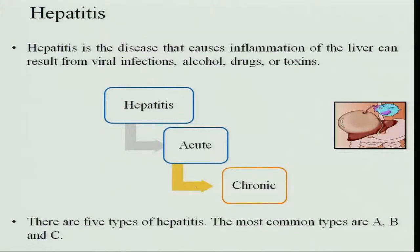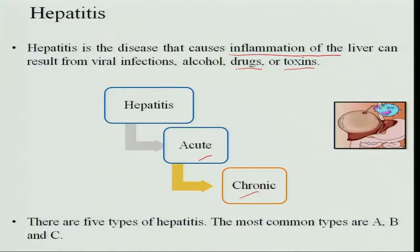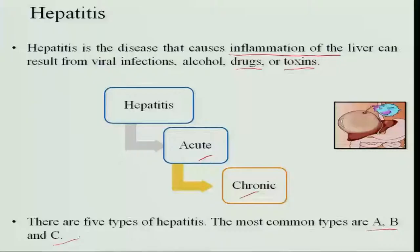Hepatitis is another disorder where the liver is inflamed. It can result from various viral infections, excessive alcohol intake, and excessive use of drugs or toxins. It can be acute or chronic and there are 5 types of hepatitis. The viruses hepatitis A, B, C, D, and E can cause hepatitis, but the most common ones are A, B, and C.